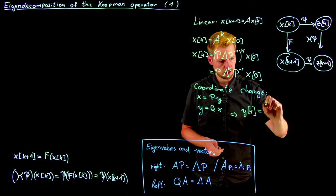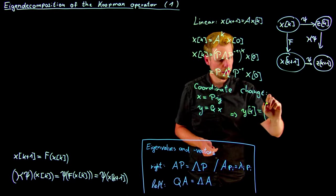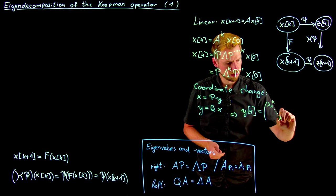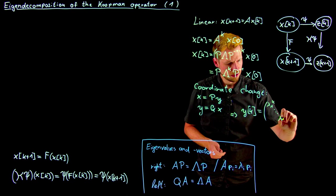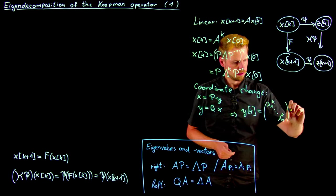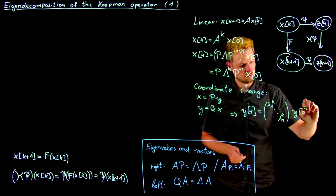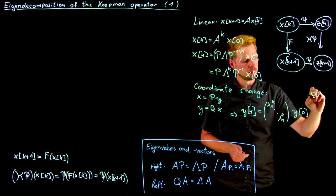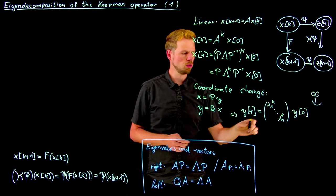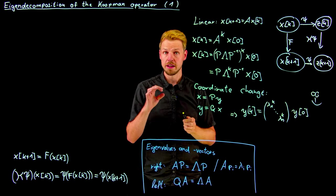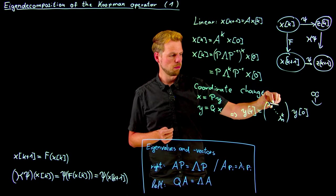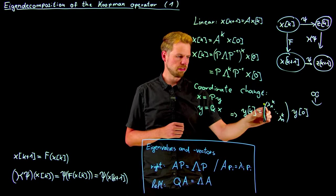And now we have this diagonal lambda matrix raised to the kth power, which means we raise lambda_1 to lambda_n to the kth power. And this is really nice because now we have decomposed our system by this coordinate change into a set of independent states. This diagonal matrix shows us that these are independent, and these behave dynamically according to the eigenvalues.